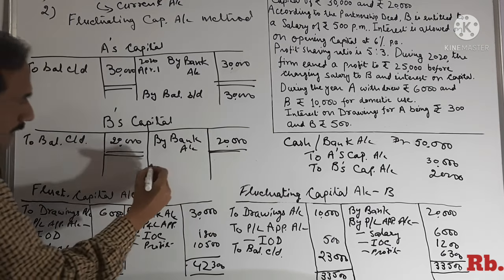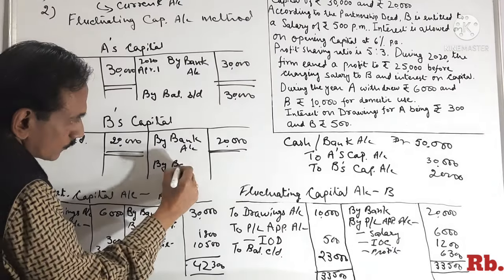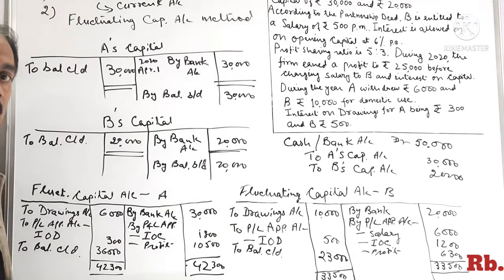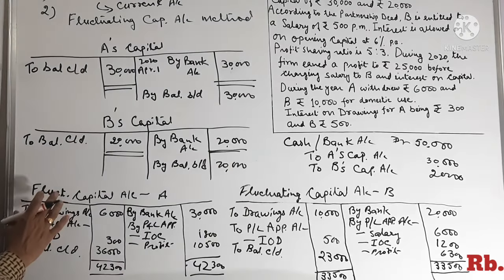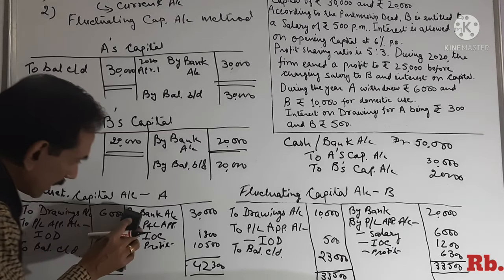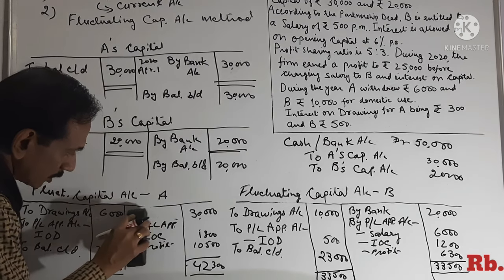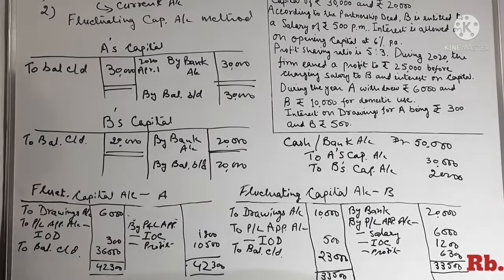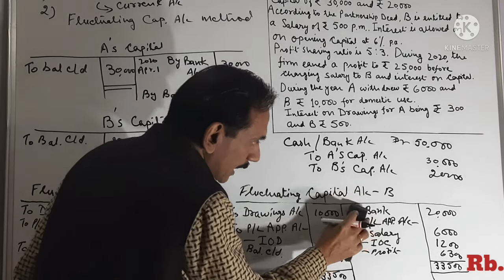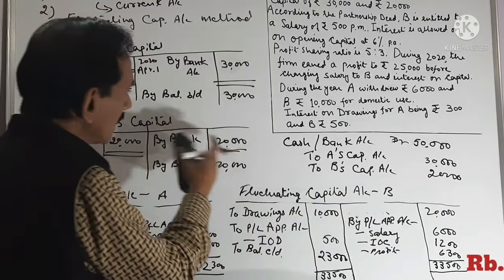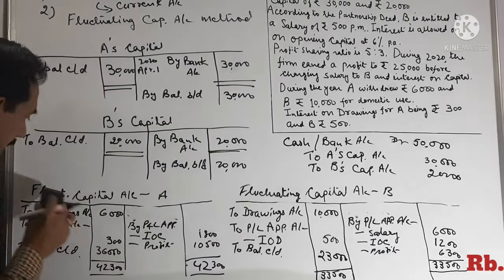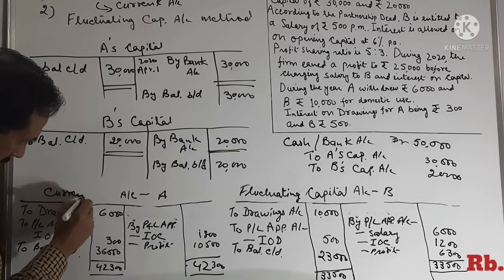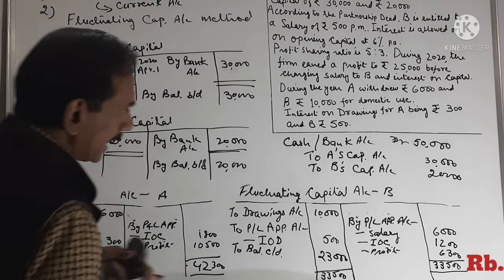Isi tarah B ka jo closing balance hai capital ka, woh bhi wahi rahega — balance c/d Rs.20,000 — aur next year by balance b/d Rs.20,000. Ab aate hain other transactions ki taraf. Jo humne fluctuating capital account mein banaya tha, agar hum usme se bank account aur capital entry hata dein, to all other transactions remain same. Lekin ab iska naam ho jata hai Current Account — current account A and current account B.